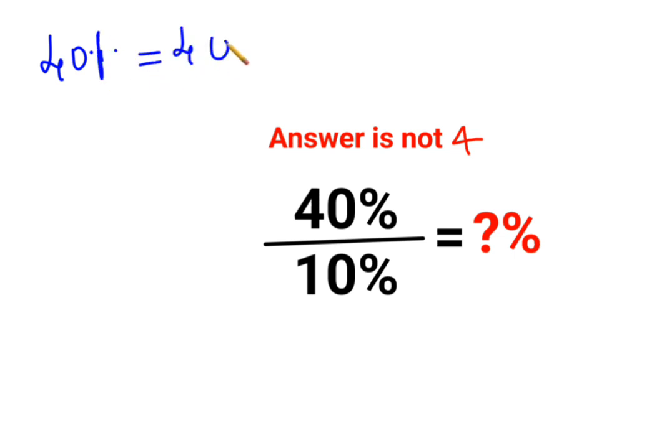So basically, instead of 40%, let's write it as 40 upon 100 divided by 10%, which is 10 upon 100. Now in order to do division, especially when a fraction is involved, you need to follow the rule of KCF.